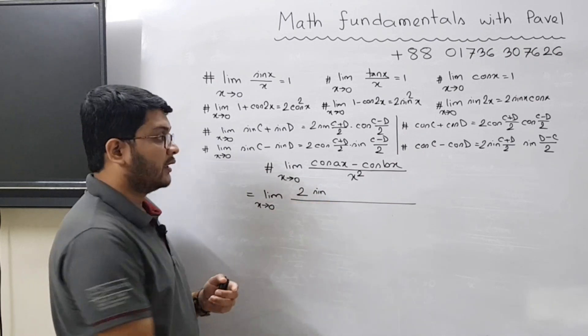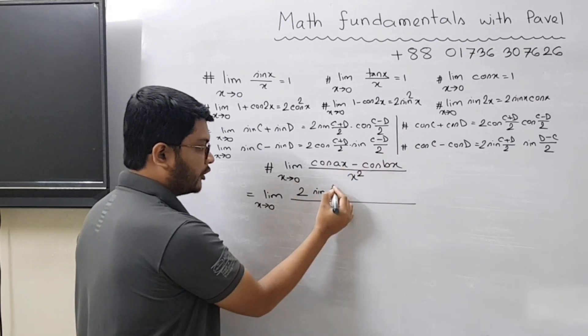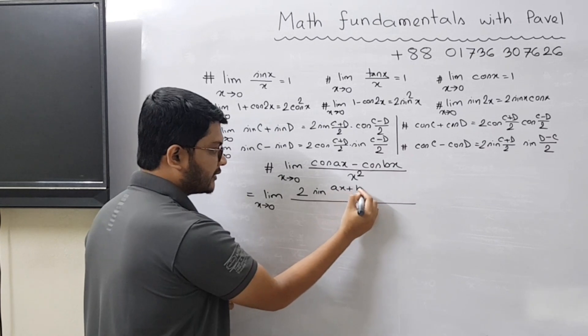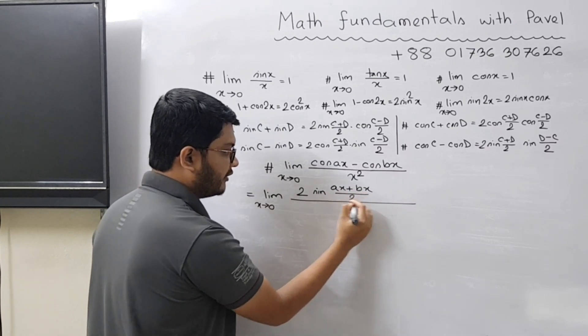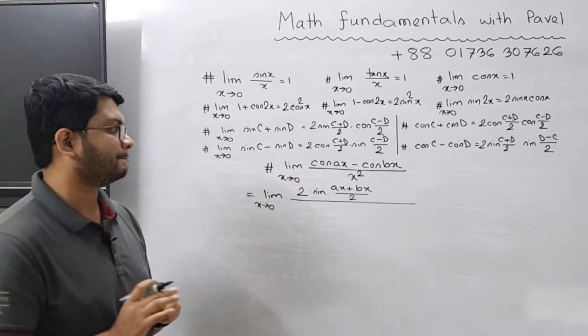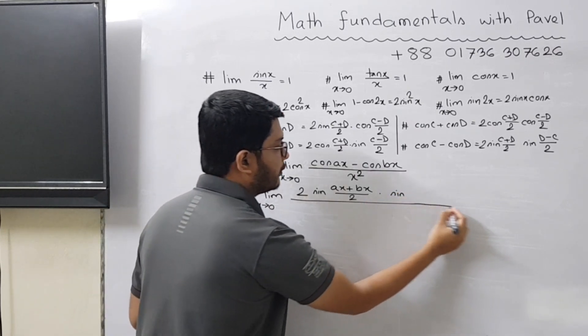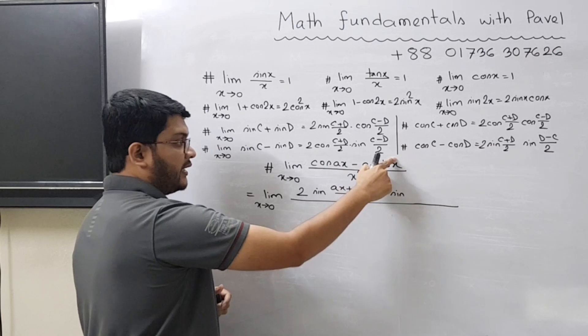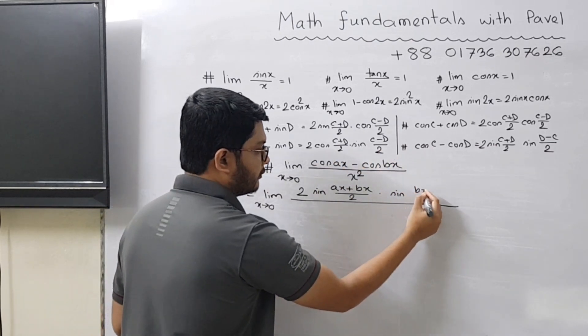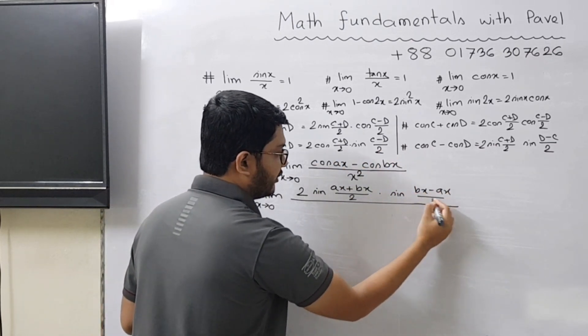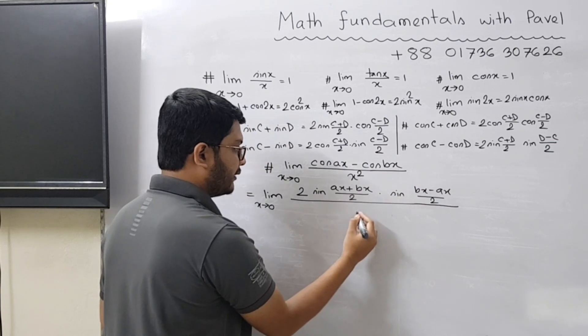This is c, this is d, so it would be ax plus bx divided by two, times sine d minus c, so bx minus ax divided by two, and divided by x square. Very easy. I hope you won't face any trouble understanding this particular part.